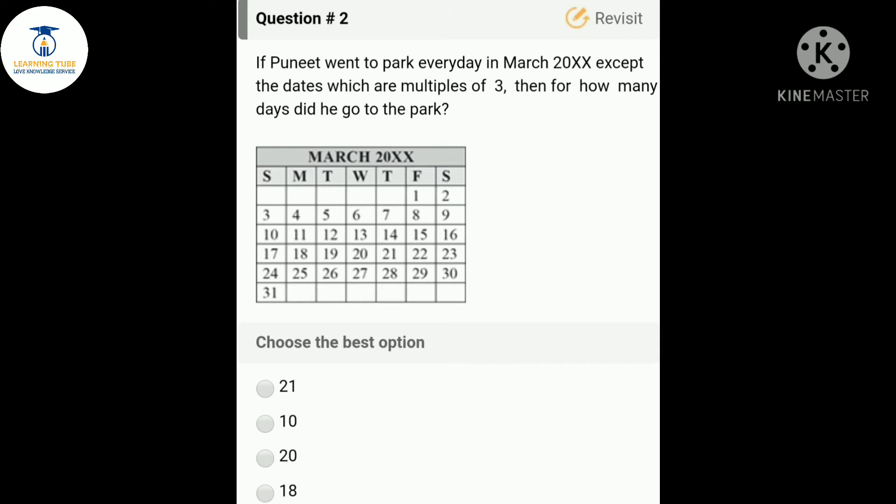Let's move towards our second question: if Punit went to park every day in March except the dates which are multiples of three, then for how many days did he go to the park? This is the month of March which has 31 days. There are total 10 multiples of three: 3, 6, 9, 12, 15, 18, 21, 24, 27, and 30. So he went to the park for 21 days, which is 31 minus 10 days. The correct answer is option A, 21.